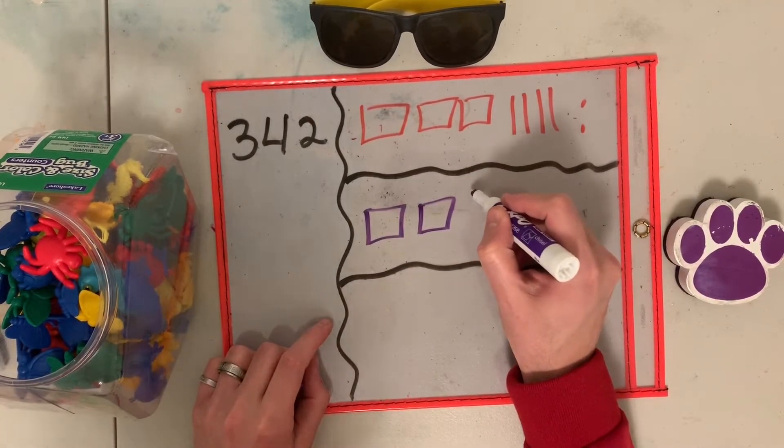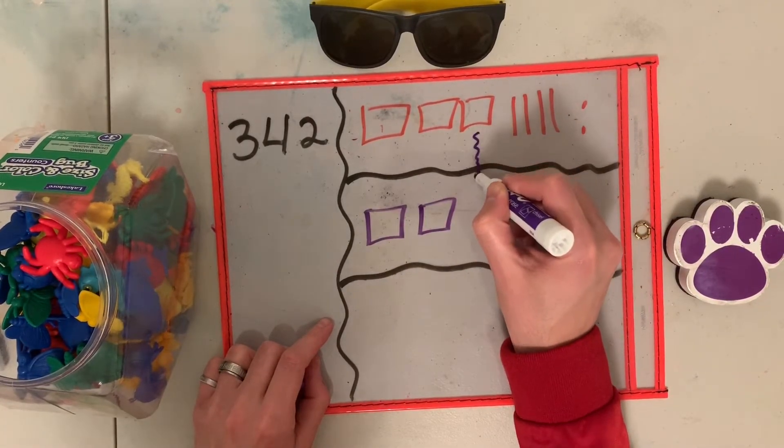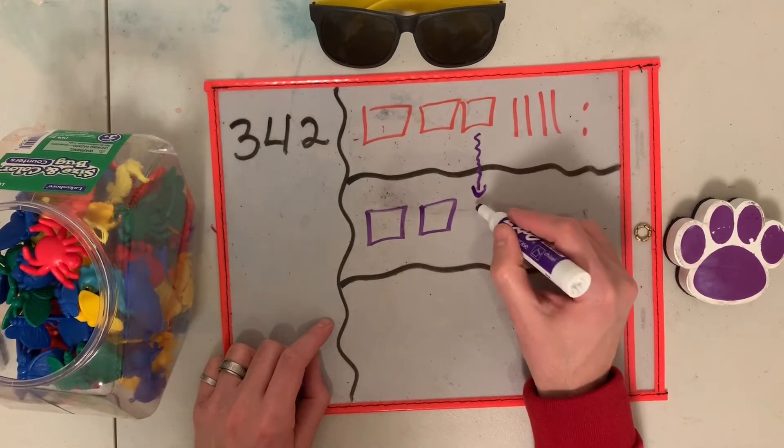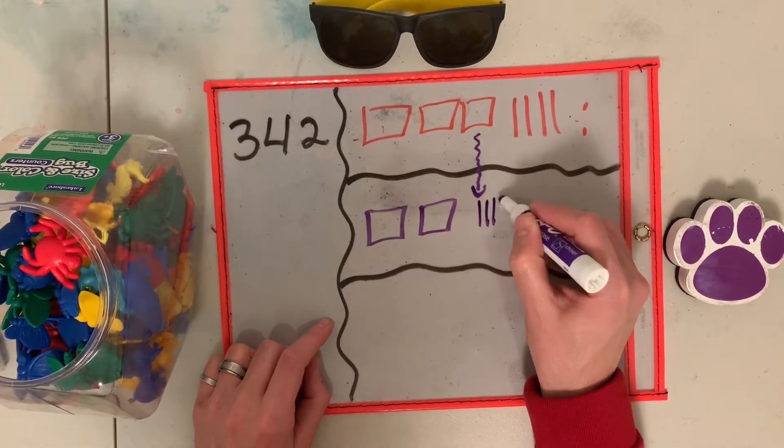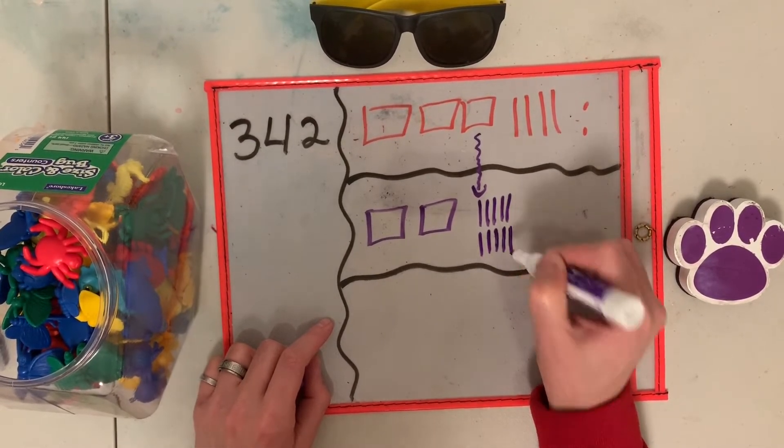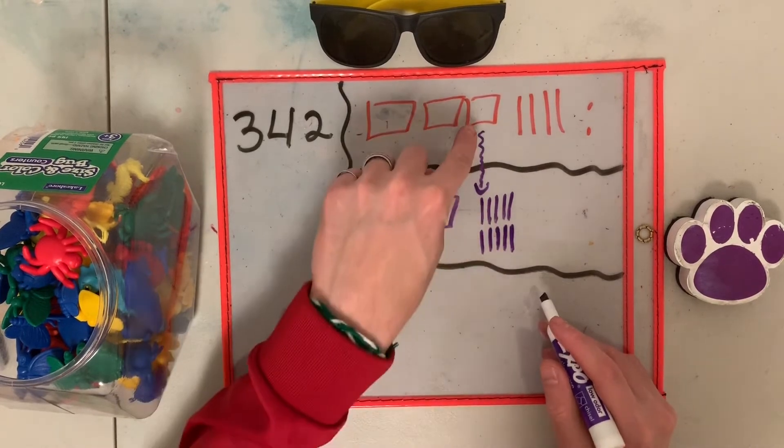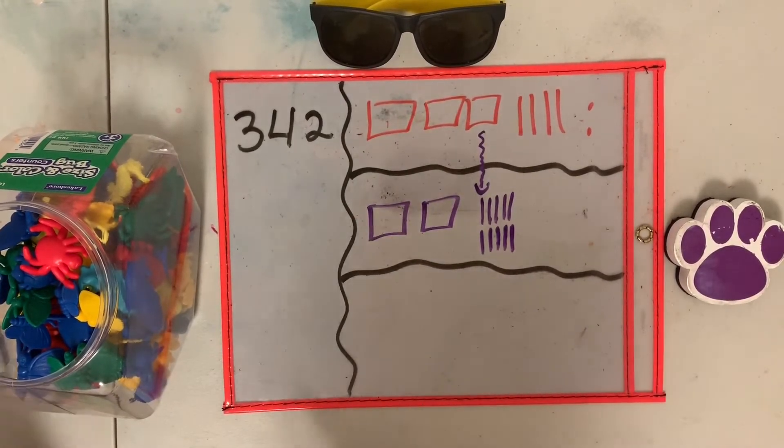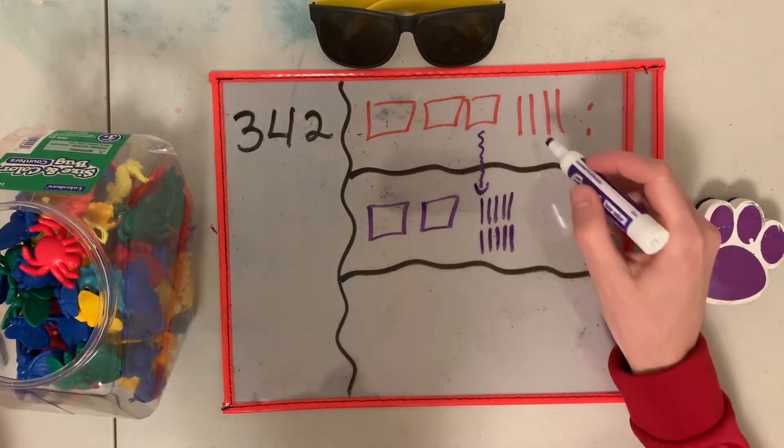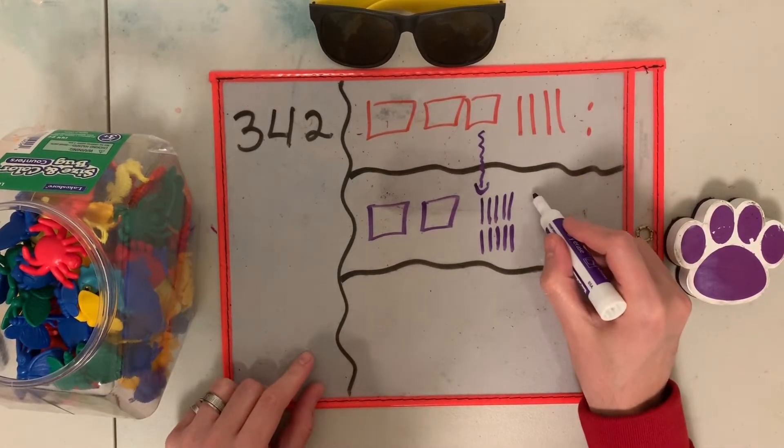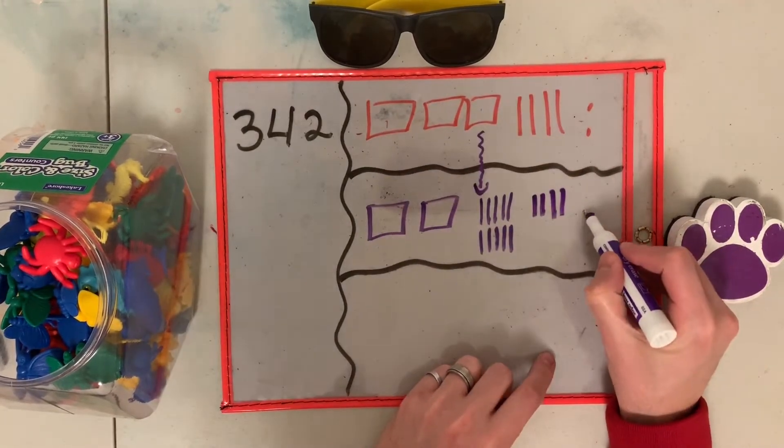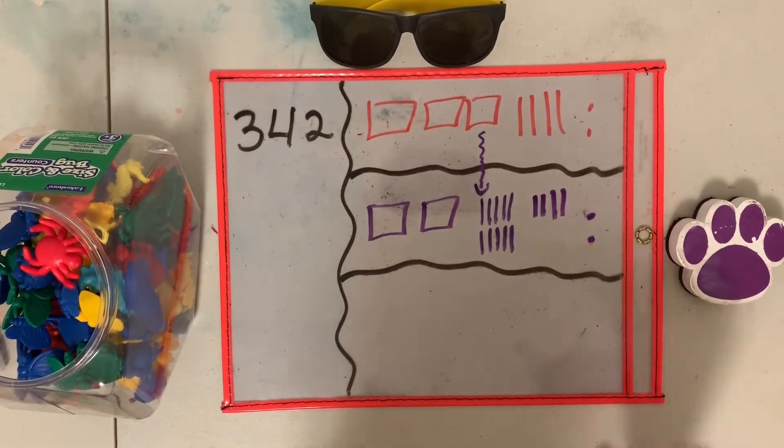So I'm going to draw this hundred, este cien. Lo voy a convertir en decenas. One, two, three, four, five, six, seven, eight, nine, ten. This is the same as this one. Es el mismo. Now I'm going to add the other four tens. One, two, three, four, and the last ones. One, two.